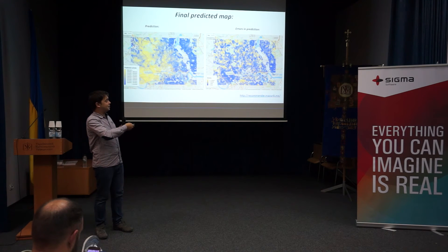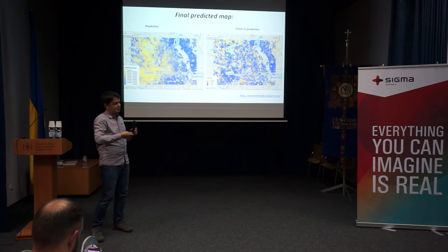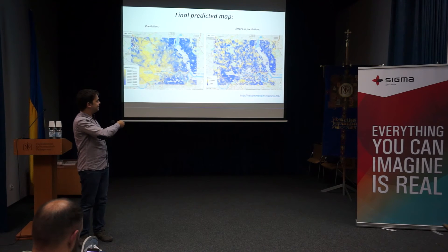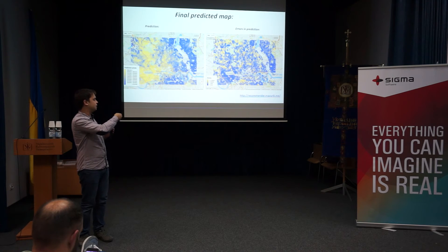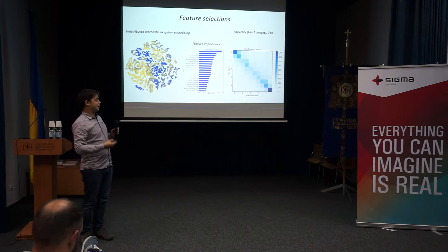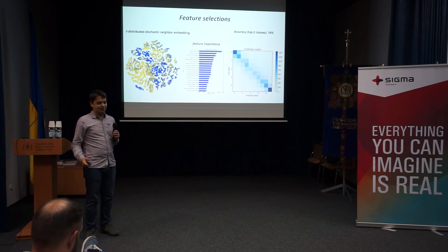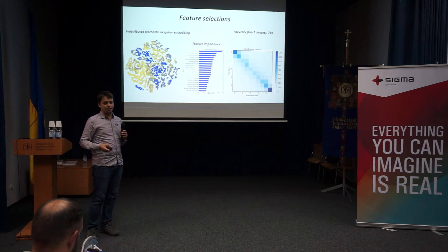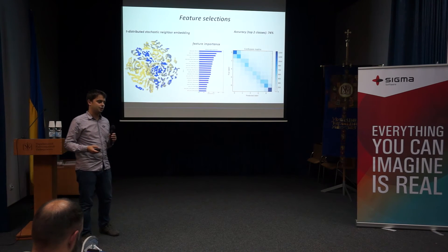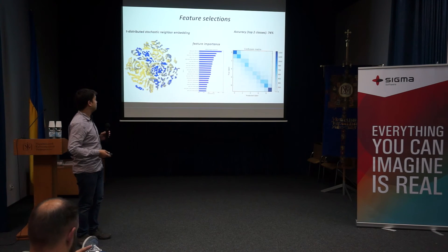Our errors compared to the real data — maybe the real data was not perfect, but it was reasonable. In the error map, yellow shows areas where we were off by two or more classes — where we did not predict correctly. But accuracy was quite good: 74% with XGBoost. And in this case, if you just used random choice, you would only get around 28% accuracy, so 74% is quite strong.